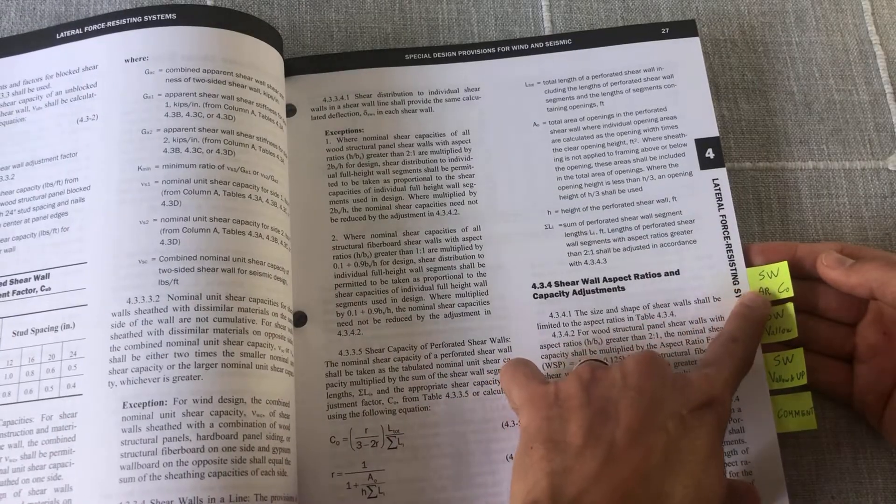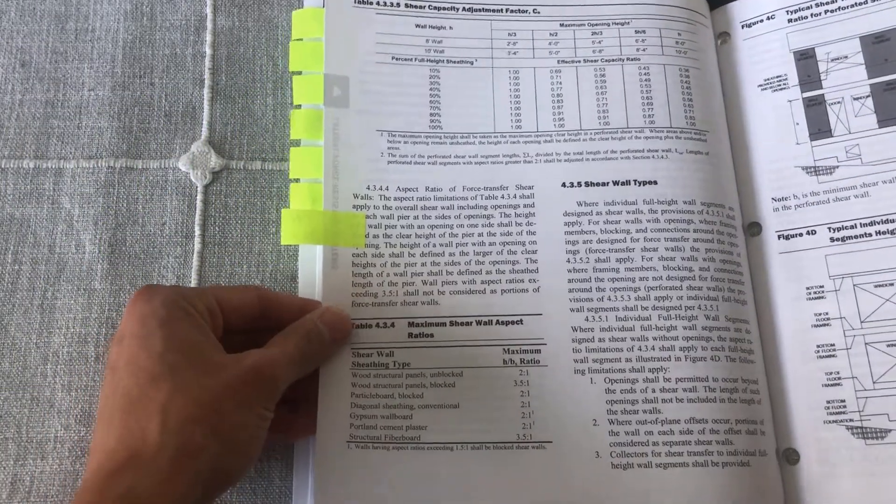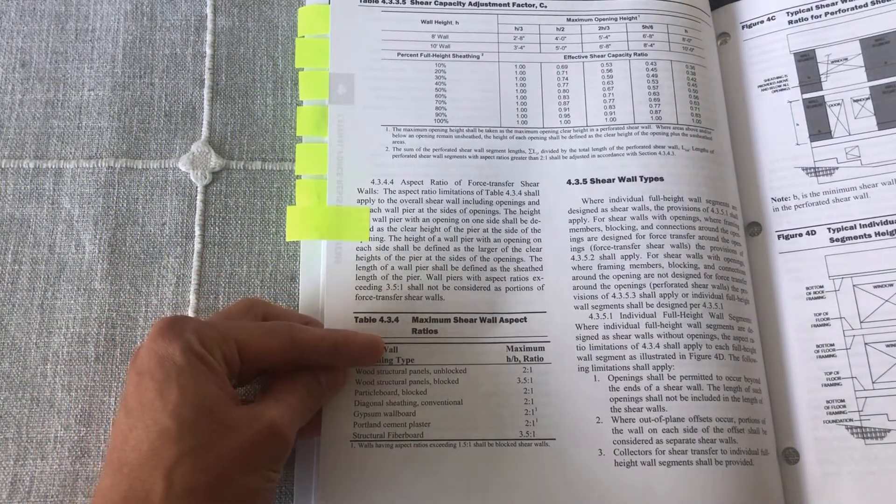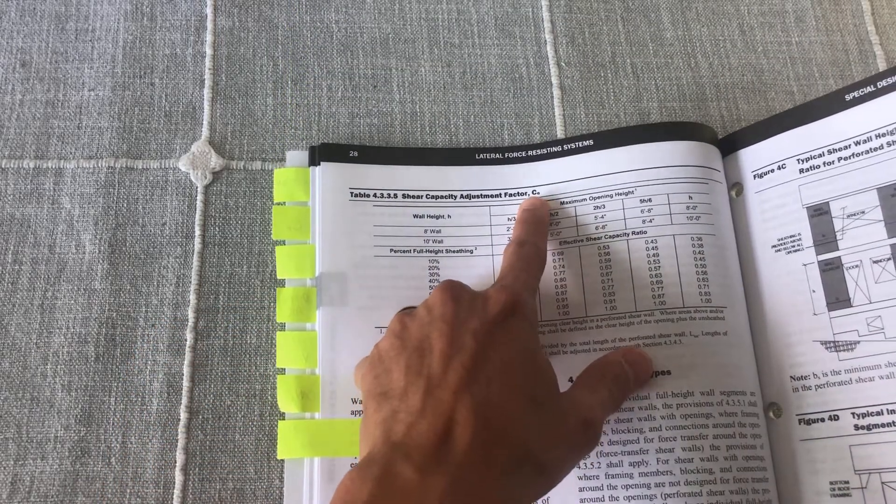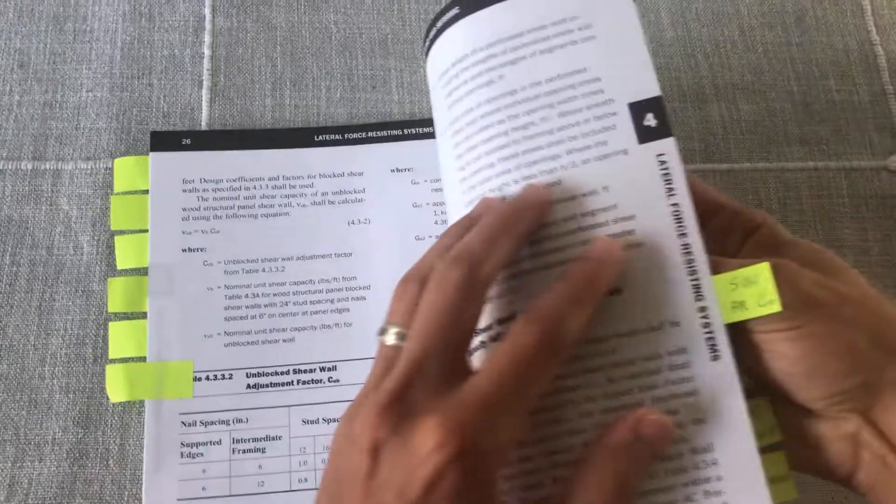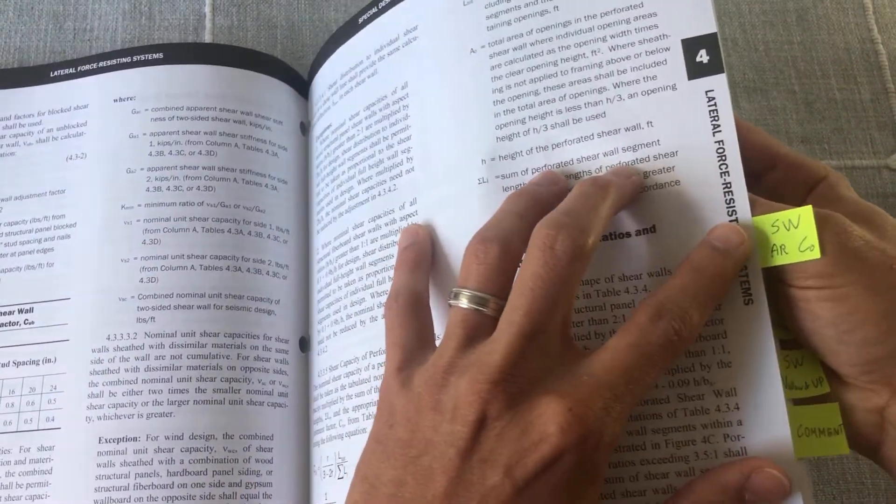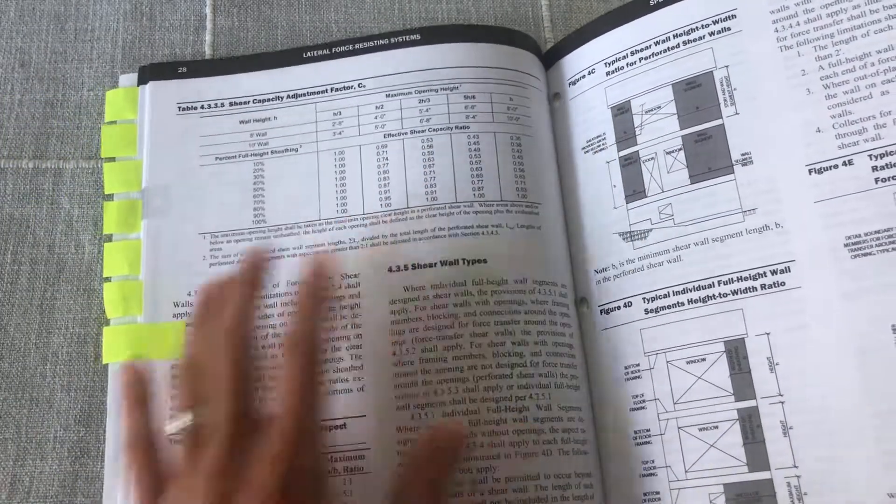Now shear wall aspect ratio, which I had mentioned before, it's right here. And also I have this adjustment factor C sub O. And that's why in my tab I had AR and C sub O here, because I have two important things on this page.